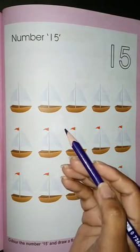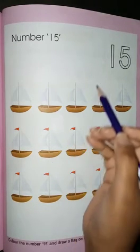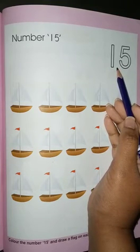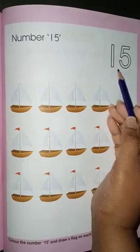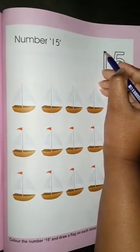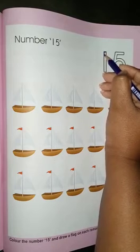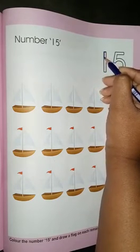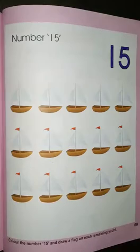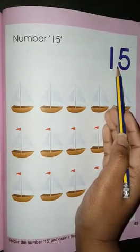I have taken a purple colour to colour this number 15. Children, you can take any of your favourite colour. I will start colouring from the boundary so that the colour may not go out of the boundary like this. I have coloured number 15.